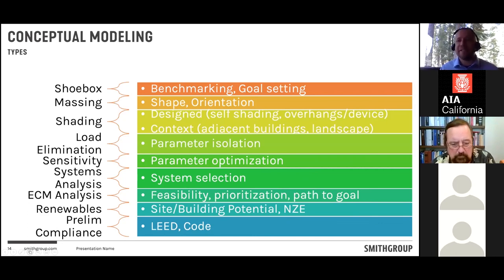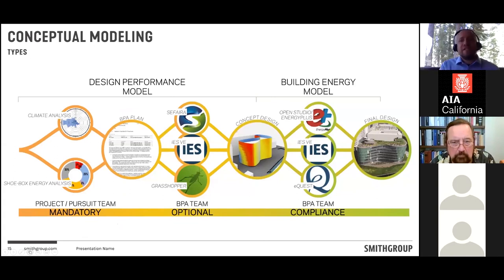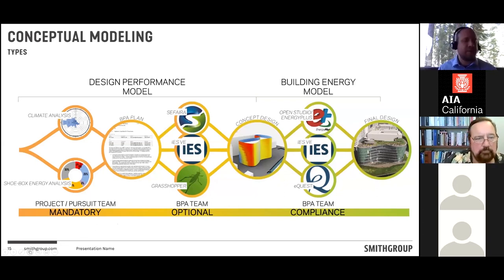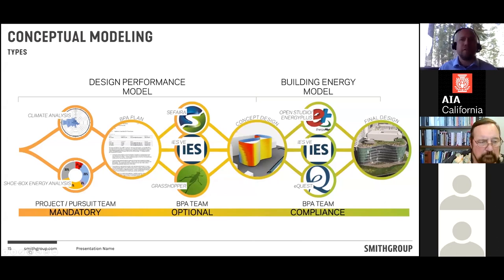Code compliance is also part of the process. Before any project starts, the firm does mandatory climate analysis — they've developed in-house tools to pull weather data and identify optimization strategies, but free tools like Climate Consultant, developed at UCLA, are also excellent. Climate Consultant can help with shading selections, wind speed, wind direction, seasonal wind, and give you an idea on a psychometric chart of what portions of the year you could achieve with thermal mass or other passive strategies. Each project then gets a Building Performance Analysis Plan — a document itemizing the strategies and types of modeling most effective for that project type.